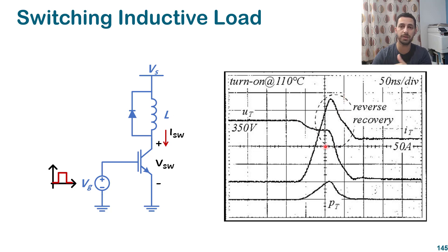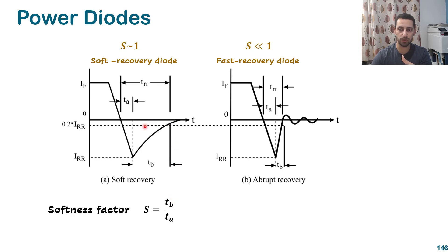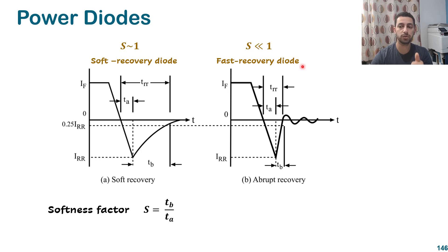That current spike can be completely eliminated or reduced by selecting a proper diode. In references you will find something called the softness factor, which is the ratio between time tb and time ta. If they are very close to each other, the diode is classified as a soft recovery diode. If tb is very short compared to ta, the softness factor is very low, meaning it is a fast recovery diode. We will continue talking about the types of diodes in the coming video. Thank you very much.